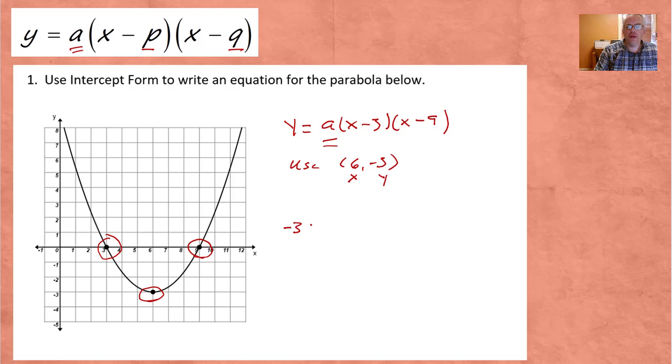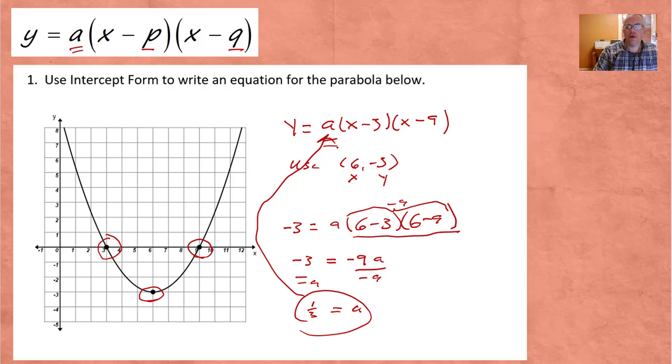Negative 3 for Y, so it would be negative 3 equals A. I'm going to put 6 in for X, so 6 minus 3, 6 minus 9. The first step is to simplify all of this. This is 3 times negative 3. Altogether, that's negative 9. So we get negative 3 equals negative 9A. Now we just divide. We're going to divide both sides by negative 9, and we get A equals negative 3 over negative 9, which is actually positive 1 third. So now we take our value of A and put it back into our equation. So when we do that, we're going to get Y equals 1 third X minus 3 times X minus 9. That's our equation.